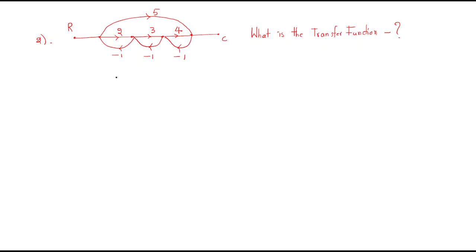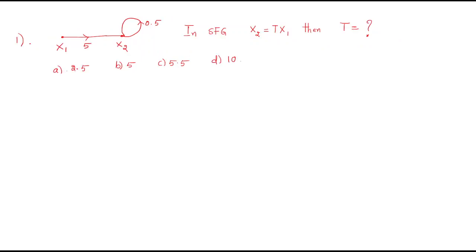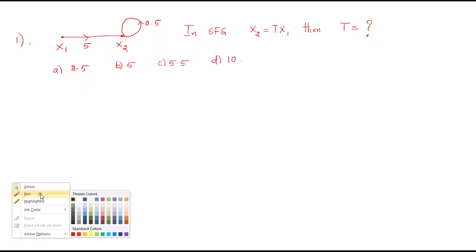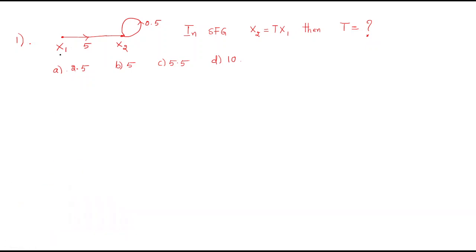Hello everyone. In this session we will discuss problems regarding the signal flow graph. The first problem is given like this: x1 and x2, where x2 has a gain of 5 and a self-loop of 0.5 in the signal flow graph. Given x2 = t·x1, what is t?